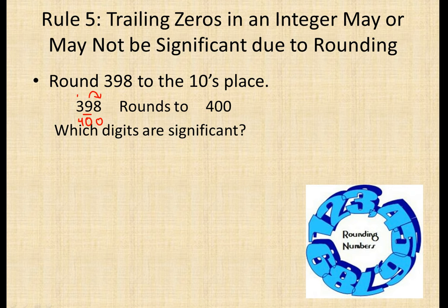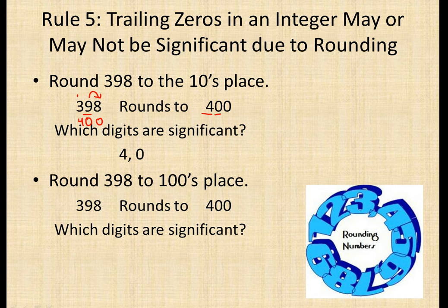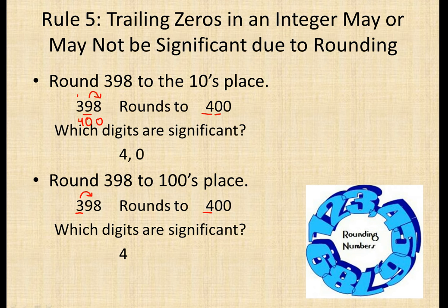We ask which digits are significant. The 4 is significant because it's a non-zero digit, and this zero is significant due to how it was rounded to the tens place — so our significant digits are 4 and 0. Now if we round the same number to the hundreds place, the 3 is in the hundreds place and the 9 makes it a 4, giving 400. But now we're only accurate to the hundreds place, so our only significant digit is 4. The number looks the same, but how we rounded changes how many significant digits we have.